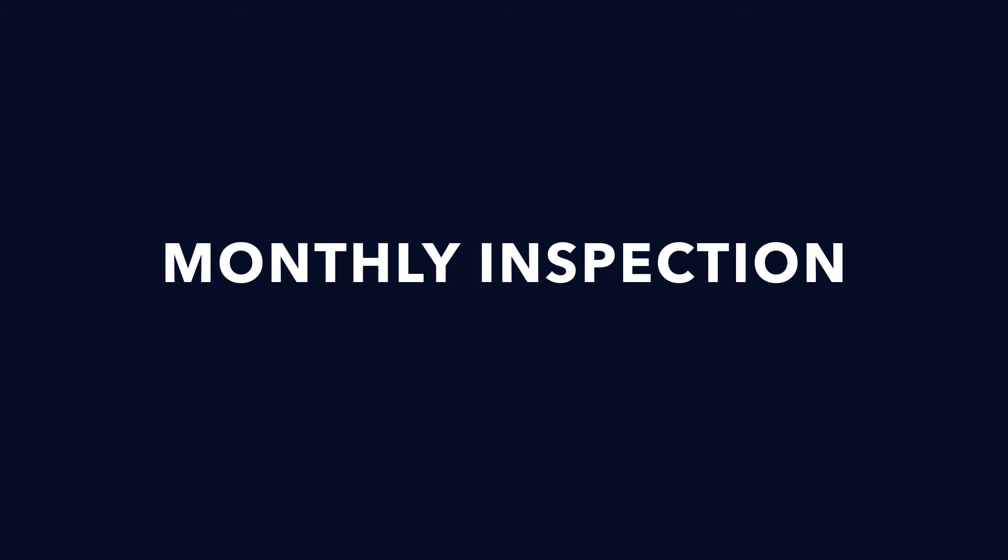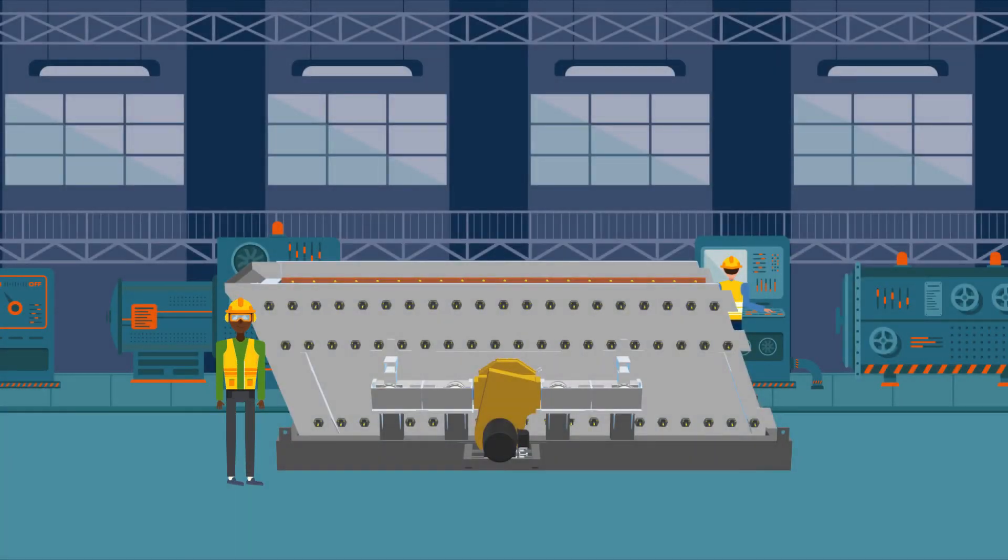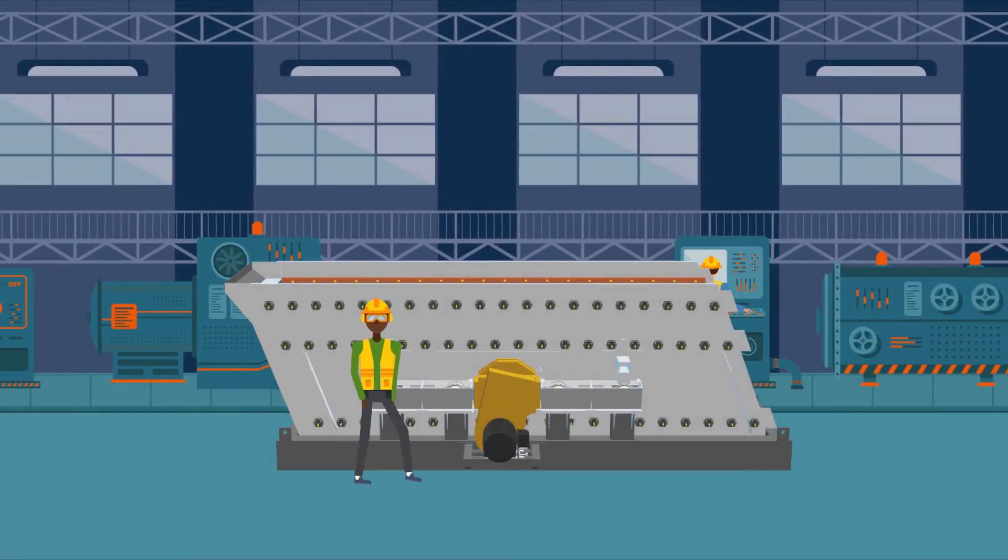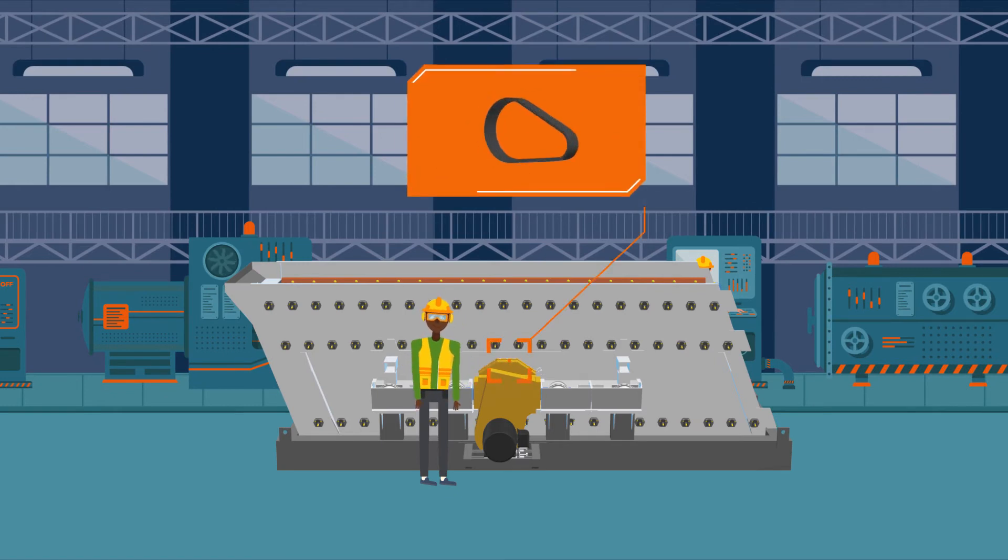Next, we'll move on to monthly inspection. Perform a visual inspection of drive V belts and check the tension. If V belts are worn, damaged, or missing, replace them as a set.